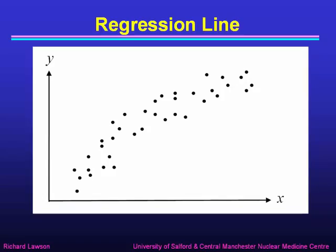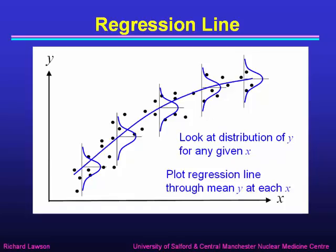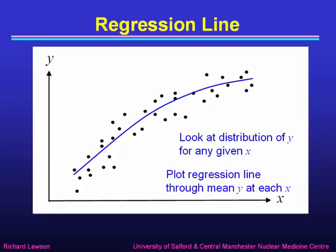Here's an example of data plotting y against x, and we can see there is a general trend upward. We can take any particular x value and look at the distribution of y for that x. The blue curves show the typical probability distribution, turned on its side, of y for any given x. You can see there is a spread — a standard deviation about a mean value at every given value of x. If we draw a line through the means, that is the regression line; it goes through the mean y at each x. So that is the definition of the regression line.